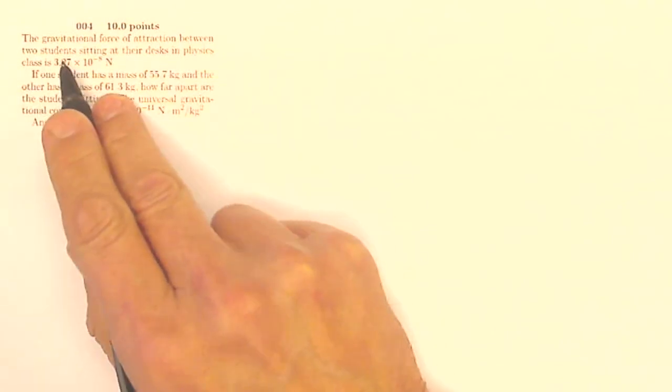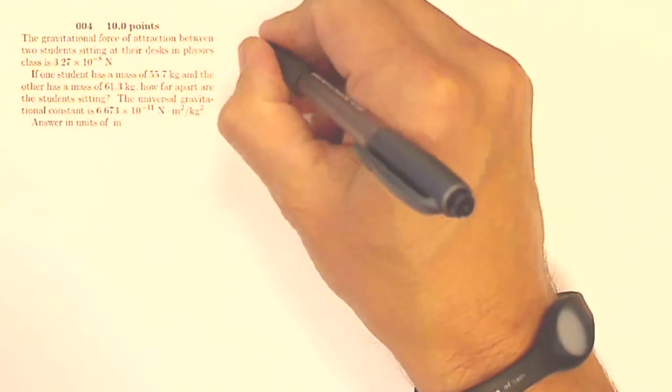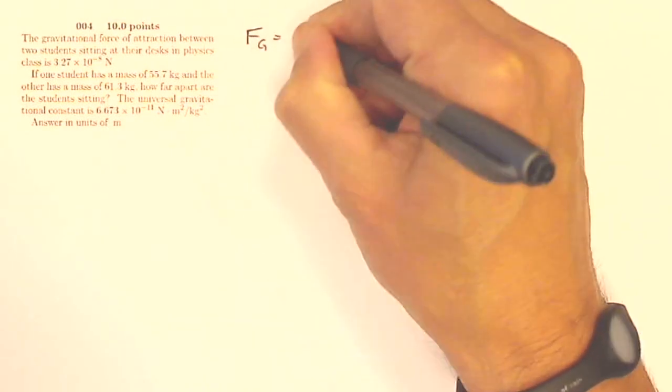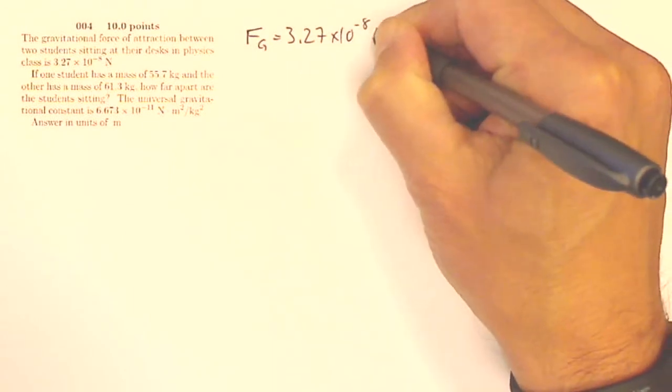The gravitational force of attraction between two students sitting in their desks is 3.27 times 10 to the minus 8 newtons. So that is my gravitational force, FG equals 3.27 times 10 to the minus 8 newtons.